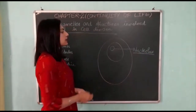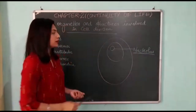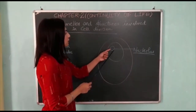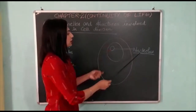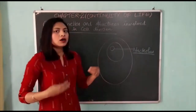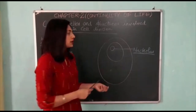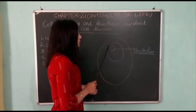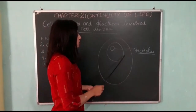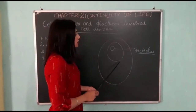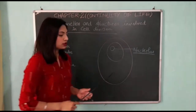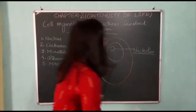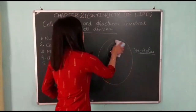During cell division, what happens to the nucleus? The nuclear envelope — the nuclear wall — breaks down and disintegrates.